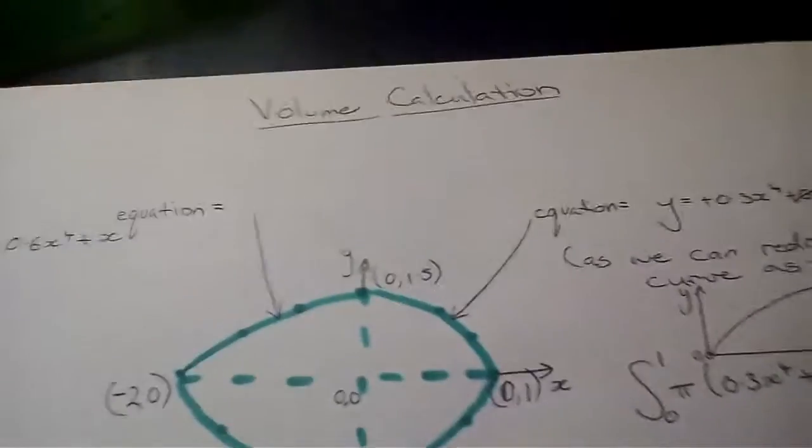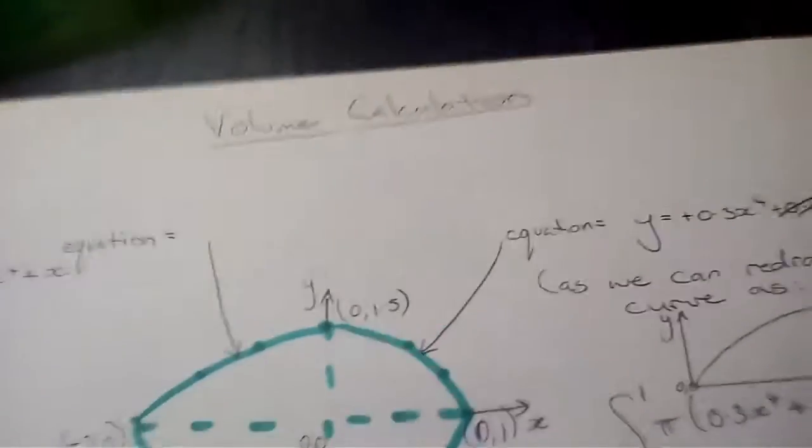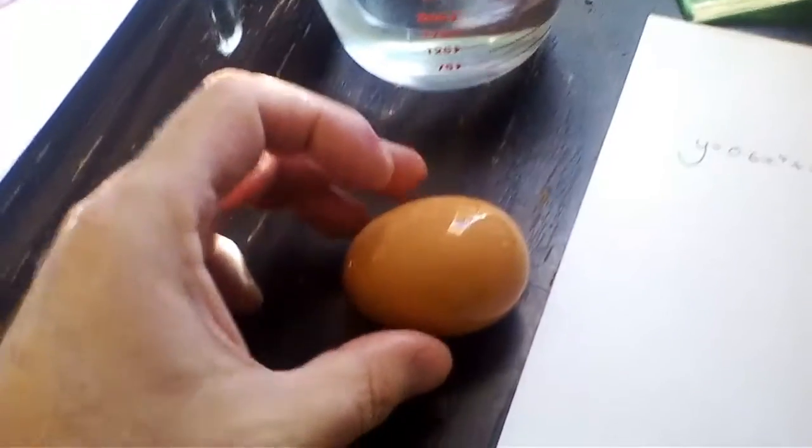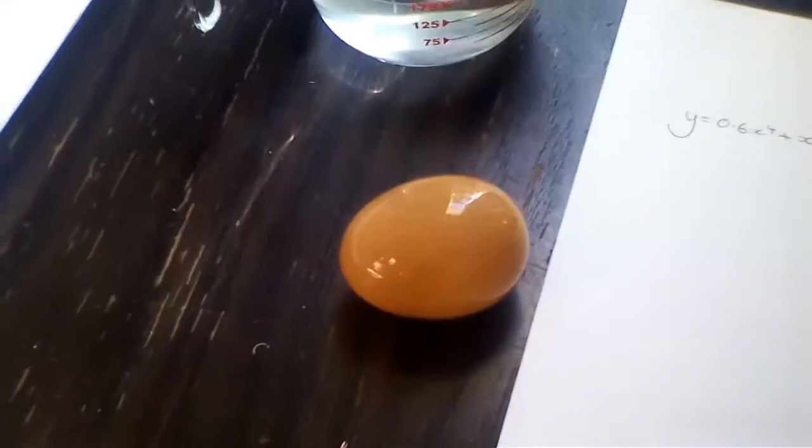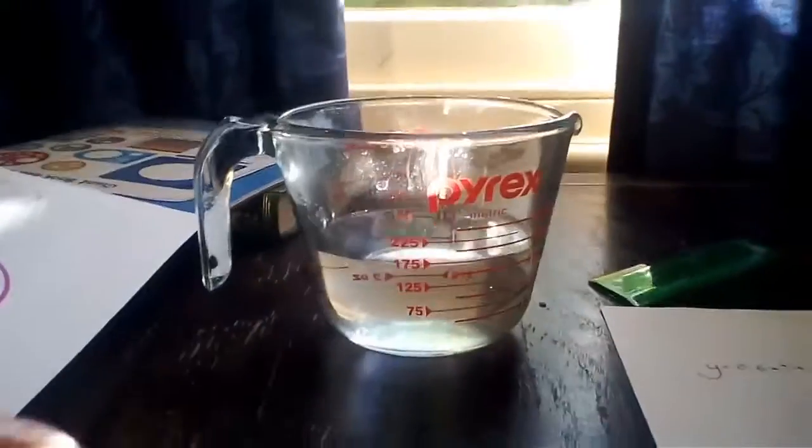Okay, for our volume calculation using calculus, we can use an egg. So what I did for the year 12 student with maths methods - I've got a container of water set up, just a very simple one.